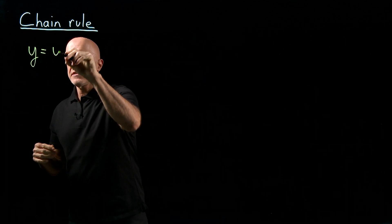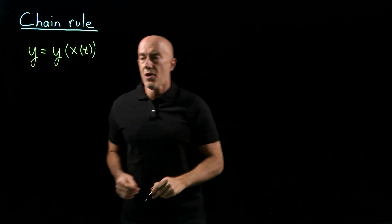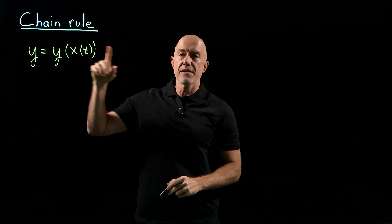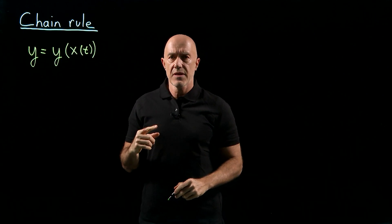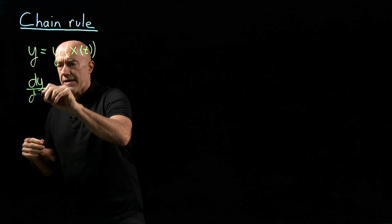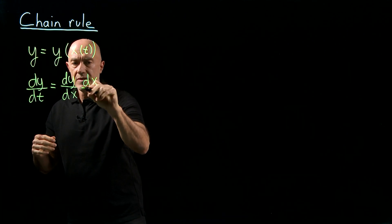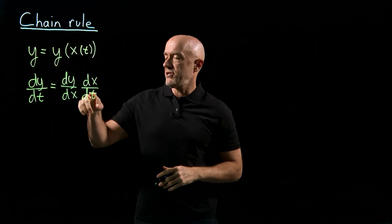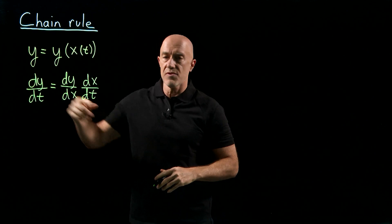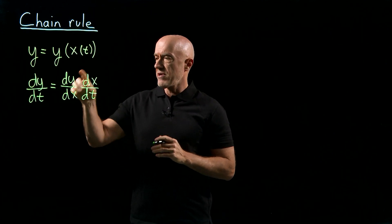Now, let's learn how to differentiate the composition of two functions. We have a function y, which is a function of x, and x itself is a function of t. If we have this type of function, we'd like to know how to take the derivative of y with respect to t. We can use the Leibniz notation with differentials so that dy/dt we can write as dy/dx times dx/dt. The Leibniz notation says it's okay to cancel dx with dx, because we're treating dy, dx, and dt as infinitesimals that we can manipulate like fractions.